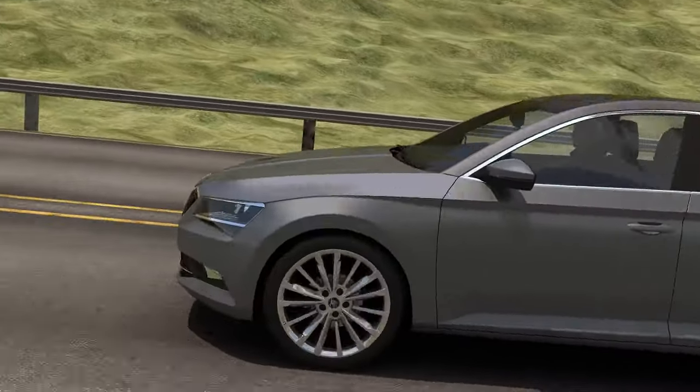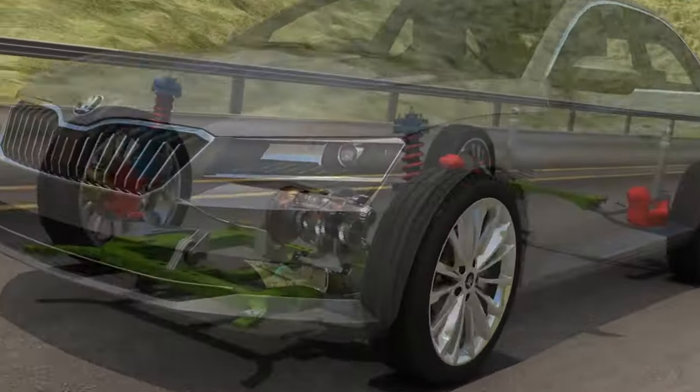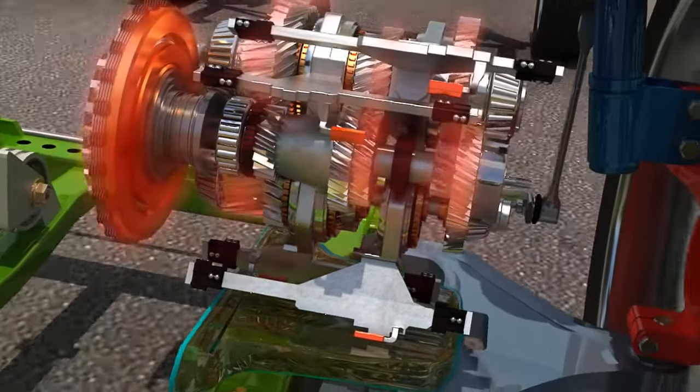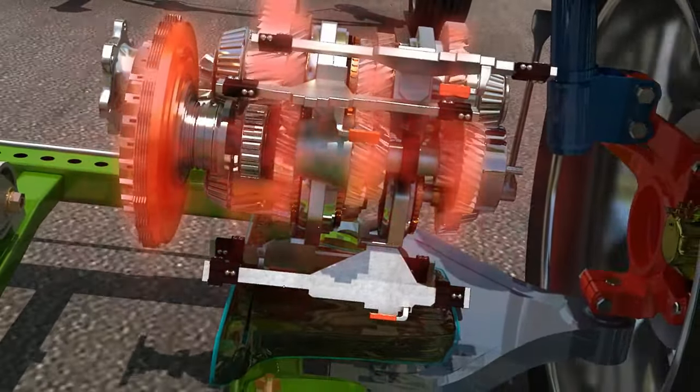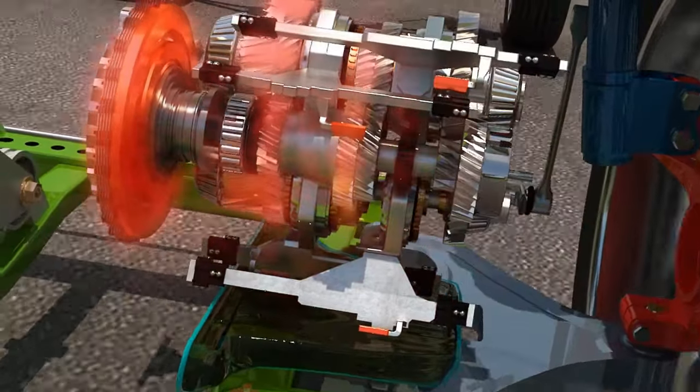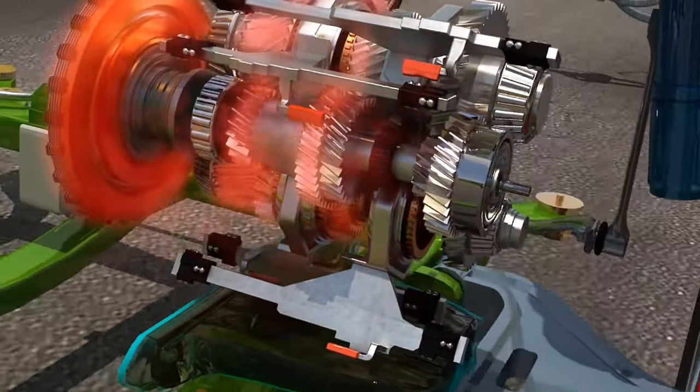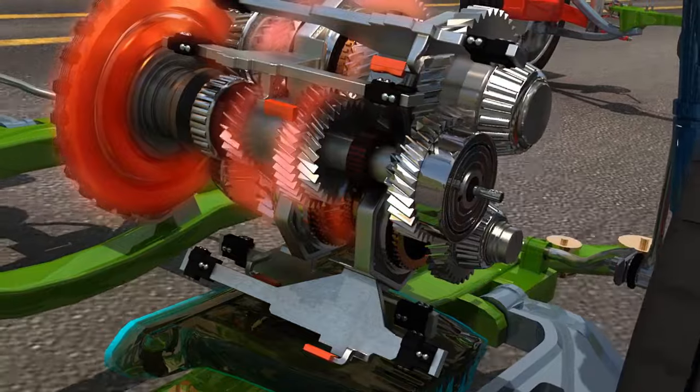If the gearbox oil is dirty, it may damage other parts of the gearbox and affect performance. Dirty oil can also overheat the gearbox or cause the clutch to burn out, which can lead to poor gear selection, loss of power, and transmission failure.